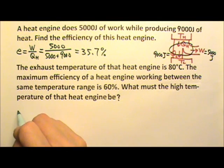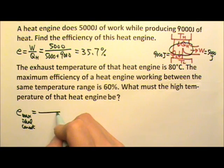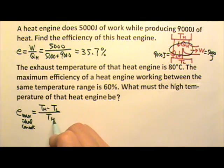The maximum possible efficiency is the ideal efficiency or the Carnot efficiency, which is TH minus TL divided by TH.